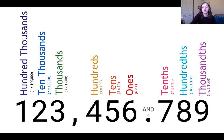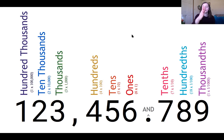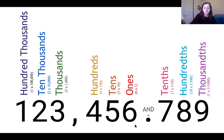I pulled up the tenths place, the hundredths place, and the thousandths place. When we look at place value, if we start with the first number to the left of the decimal, that's our ones place. From there, each number to the left is ten times greater than the last number. So we go from the ones place to the tens place, to the hundreds place, into the next period or set of numbers, which is the thousands, ten thousands, and hundred thousands.